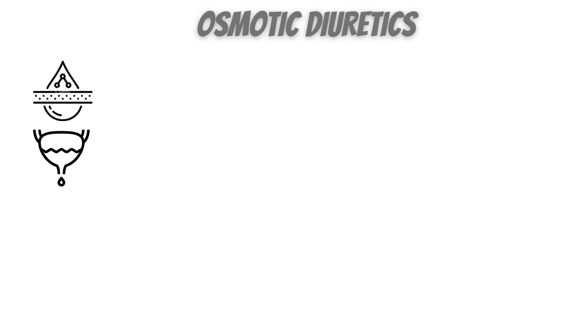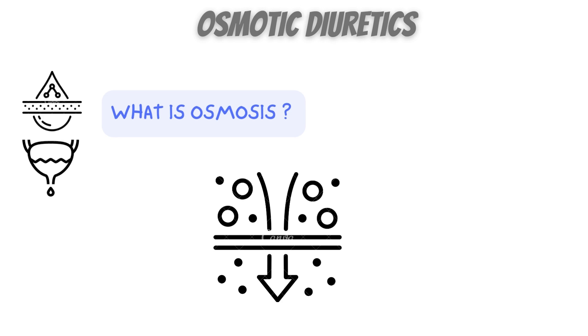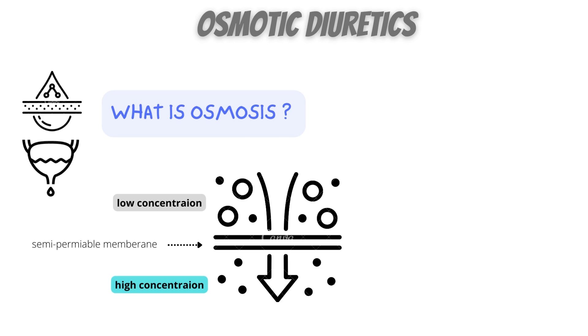In this video, we will be learning about osmotic diuretics. To understand the mechanism of action of osmotic diuretics, we need to understand what is osmosis. By definition, osmosis is a process by which the molecules of a solvent and water pass from a solution of low concentration to a solution of high concentration through a semi-permeable membrane.